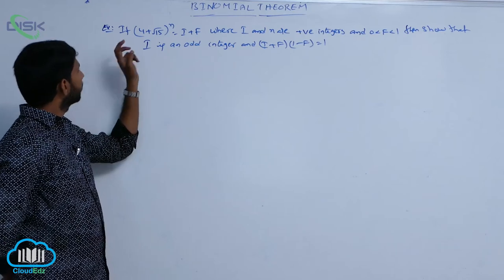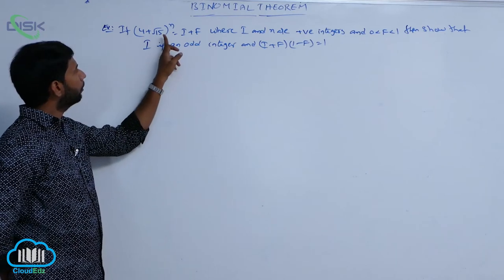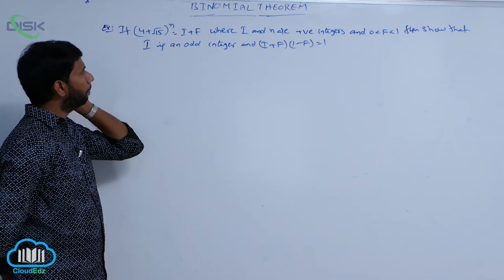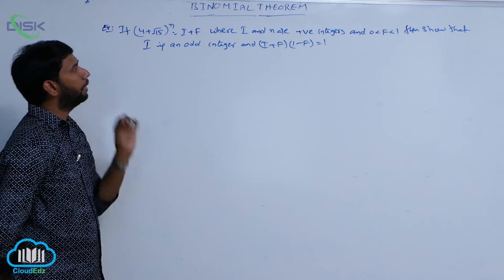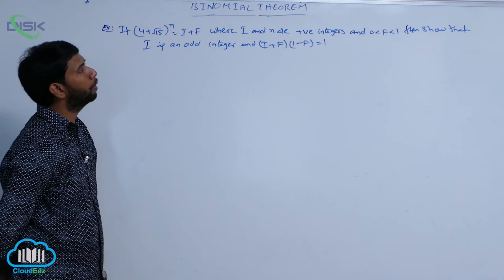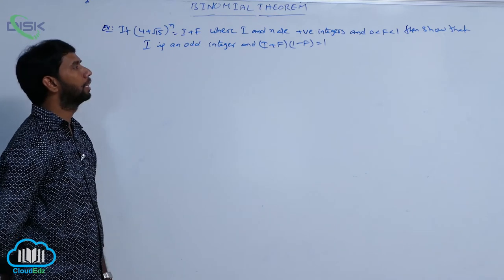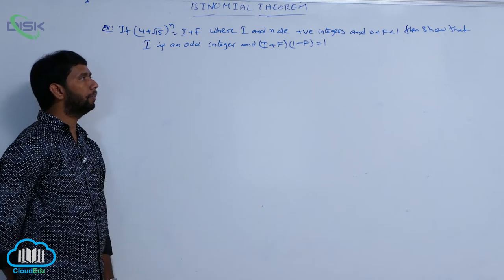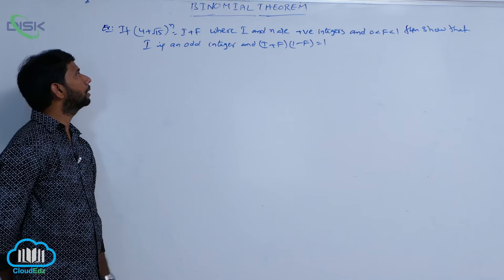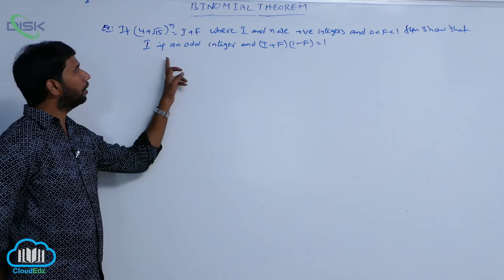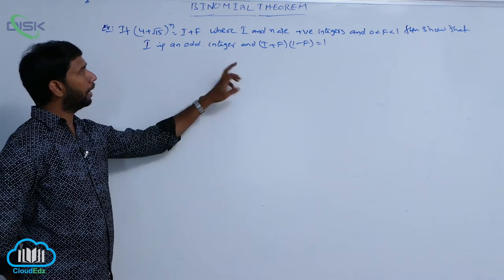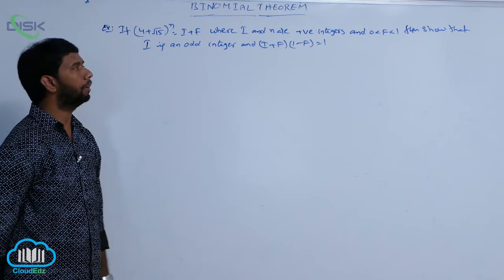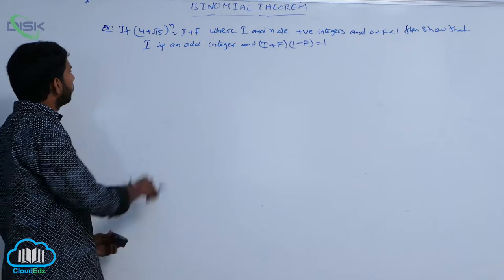Next example: (4 + √5·√15) whole power n is equal to i plus f, where i and n are positive integers and 0 < f < 1. Then show that i is an odd integer and (i + f)(1 - f) = 1.